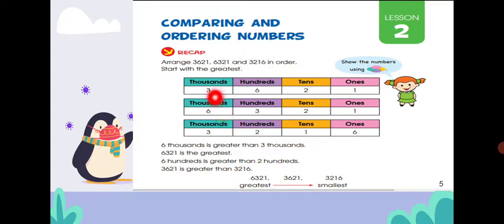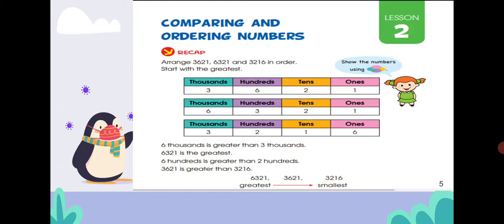You have three values here: three thousand, six thousand, and three thousand again. We can see that two places have three in thousands and one is different. Comparing the first two values, six thousand is greater than three thousand — six is greater than three.